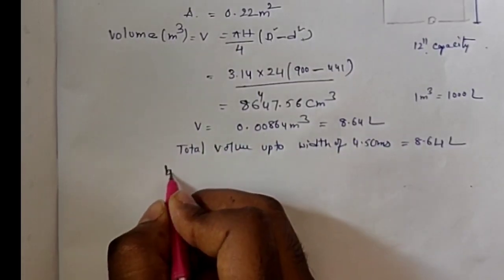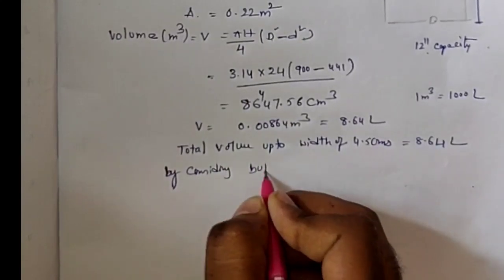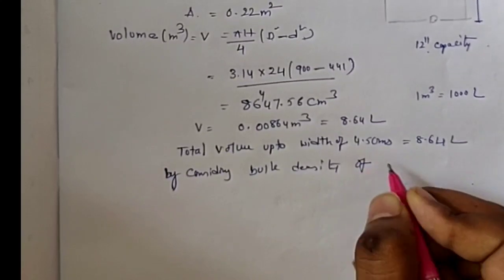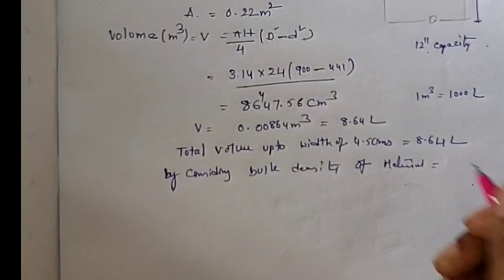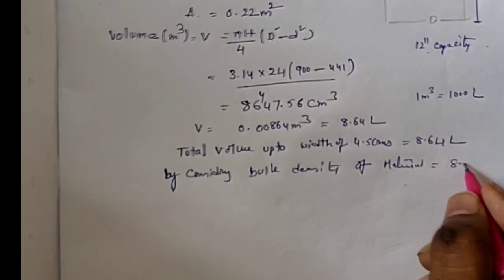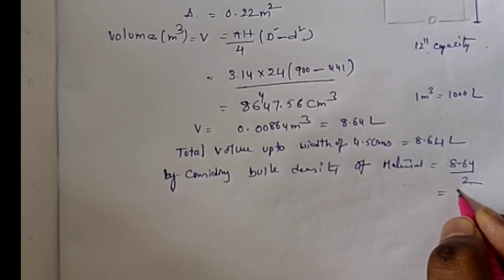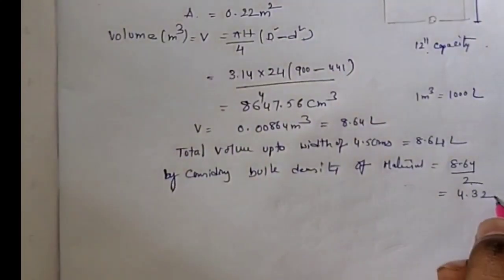By considering bulk density of material equal to 0.5, divided by 2, you will get approximately 4.32 kg.